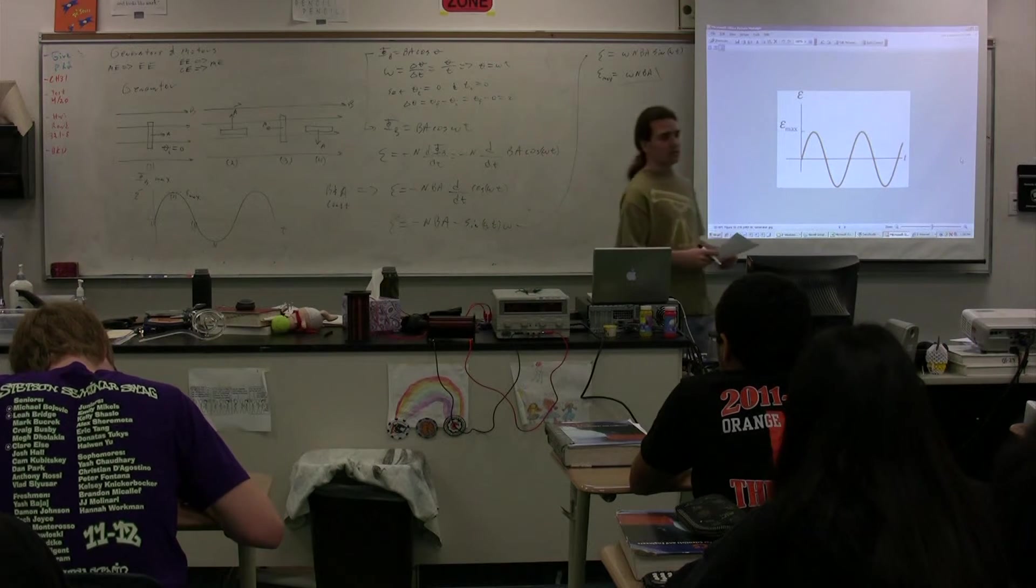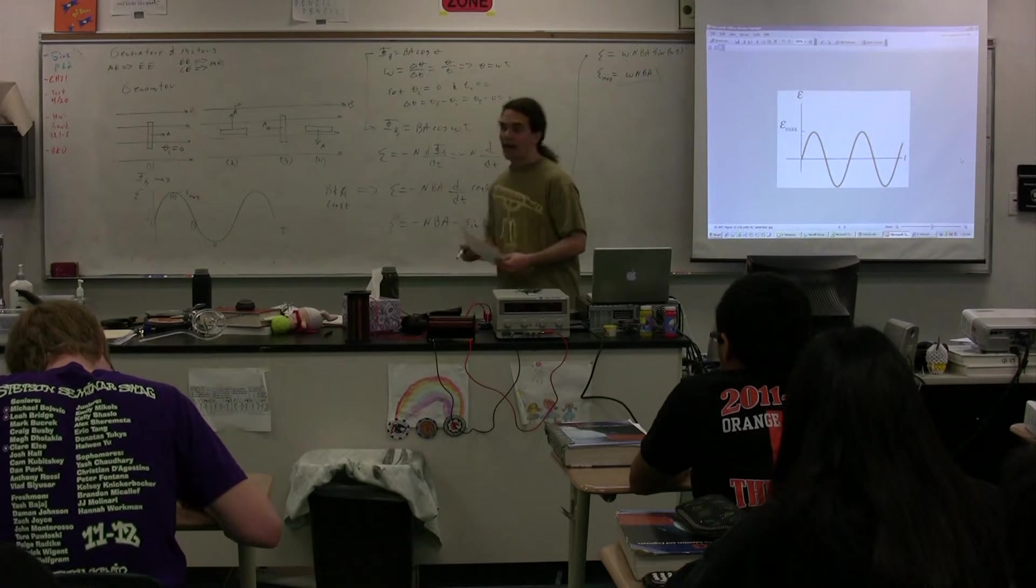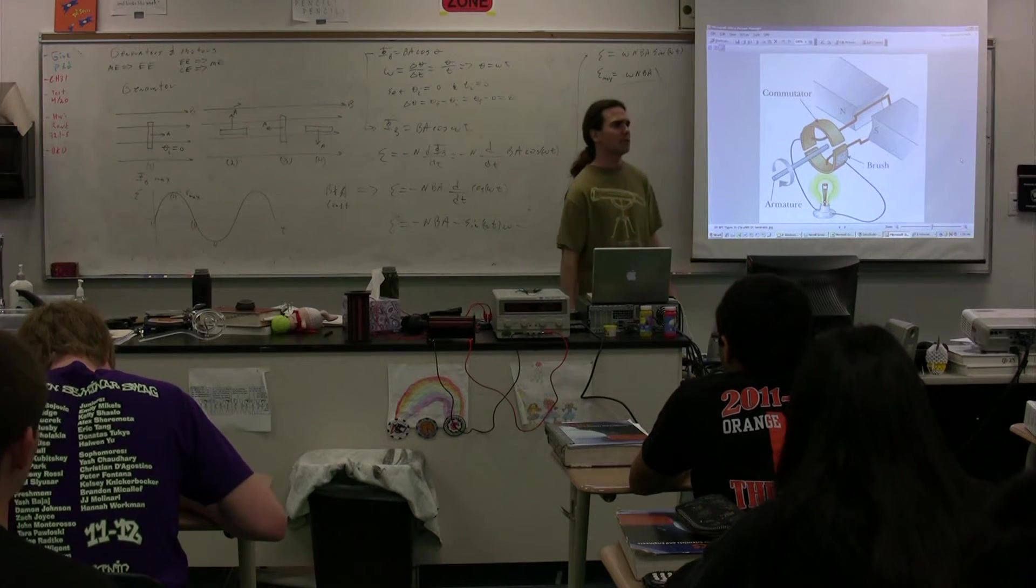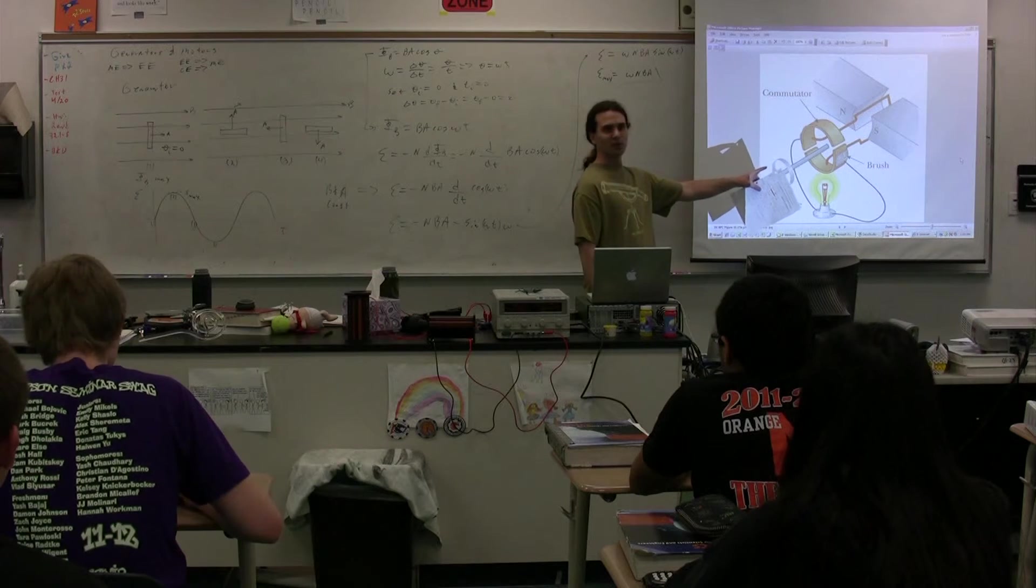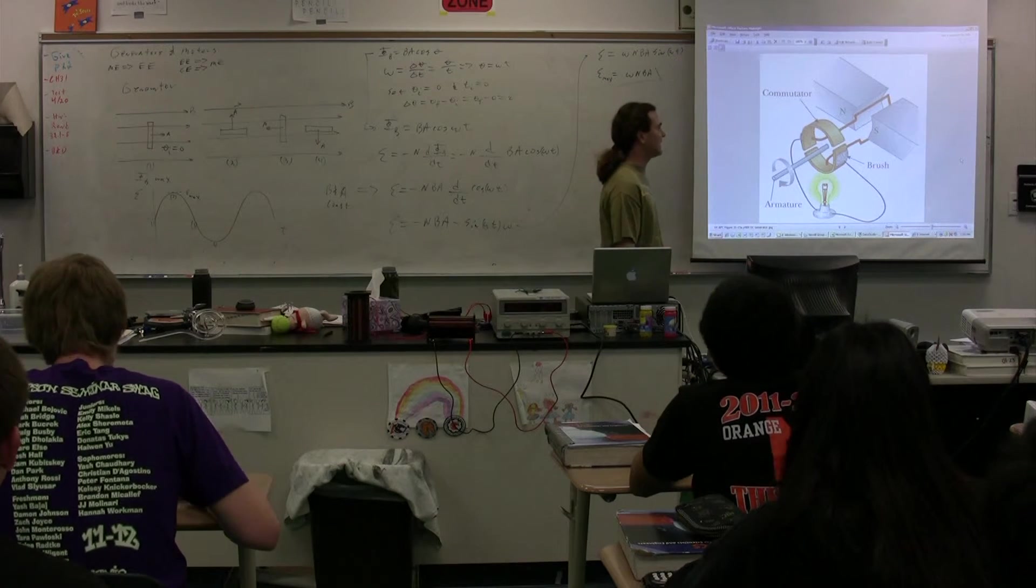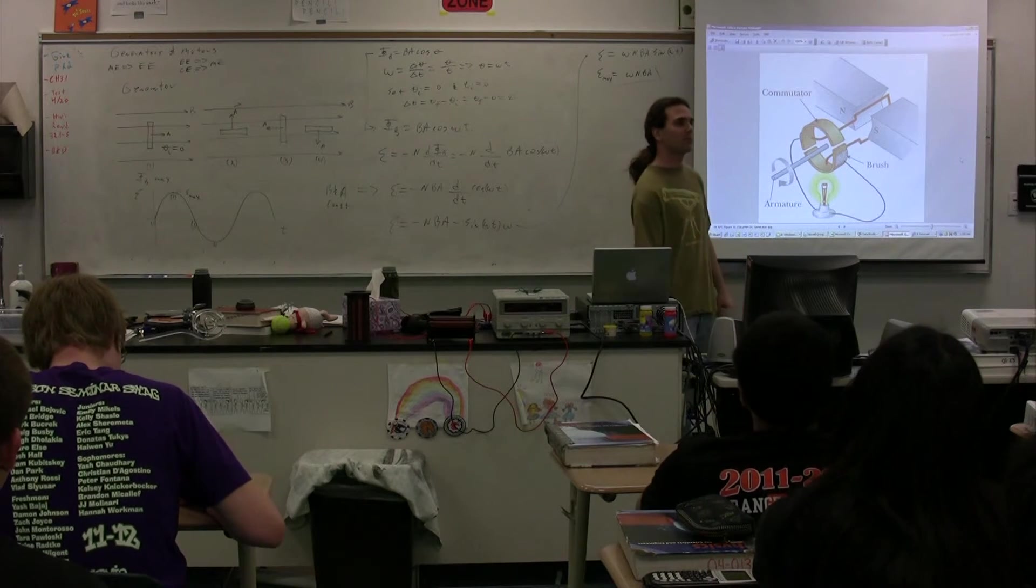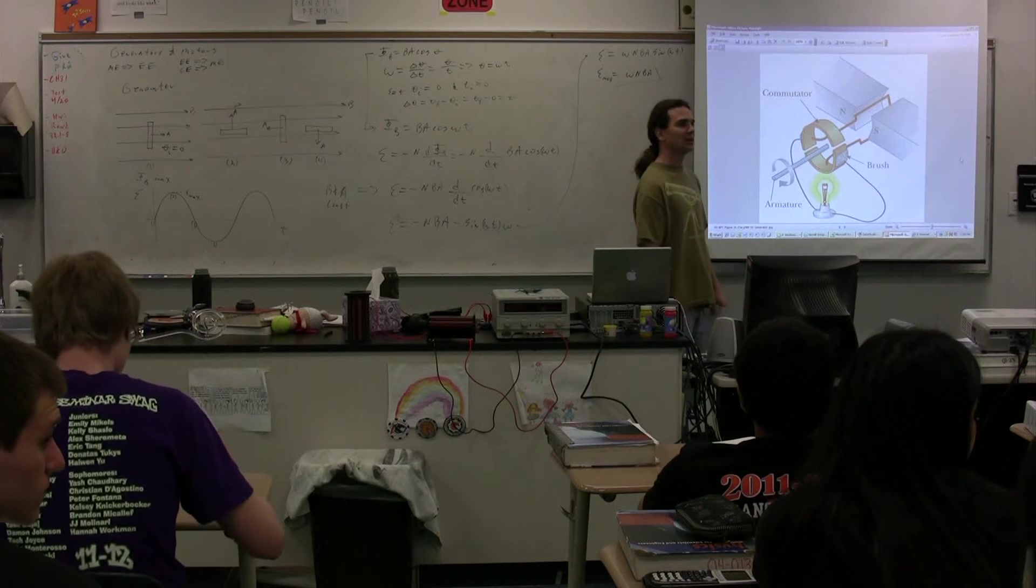Now, you can also create direct current. But what you have to do in order to create direct current is to use something called a split ring commutator, which is this. What it does is, it keeps the direction of the current the same the whole time.